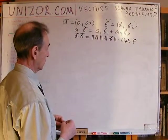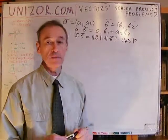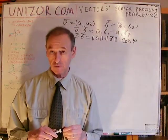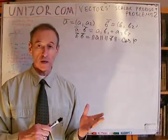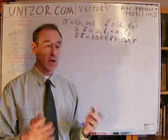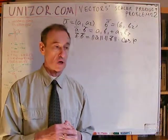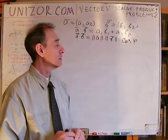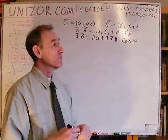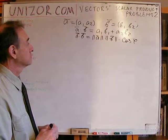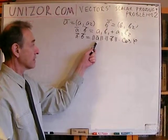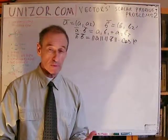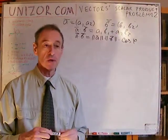Rule number one: the scalar product should not depend on transformations of the coordinate system which preserve the metric — meaning lengths of segments are not changed and the angle between segments is not changed either. This includes transformations like rotation or reflection of the coordinate system relative to one of the axes. Well, let's just look at this formula: it depends on the lengths of the vectors and the angle between them.